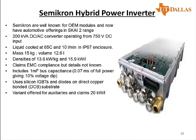This is a unit from Semikron, a company well known for manufacture of power devices and power modules for various applications. They are building a hybrid power inverter unit that can be used for hybrid vehicles. This unit is a 200 kW DC to AC converter operating from 750 volts DC. It is liquid cooled up to 10 liters per minute, weighs about 15 kilograms, and has a volume of 12.6 liters, giving about 13.6 kilowatt per kilogram and 15.9 kilowatt per liter — a very dense power electronic system.